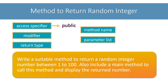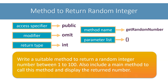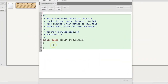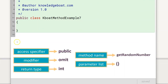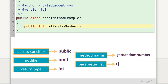Access specifier will be public, no modifier. The method should return a random integer number, so return type will be int. Since no name is given in the question, I will name it getRandomNumber. The method will take no input parameters. Putting together the different parts of the prototype, it will be public int getRandomNumber with an empty parameter list.